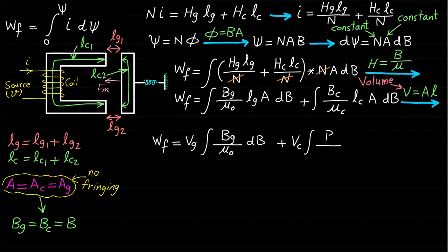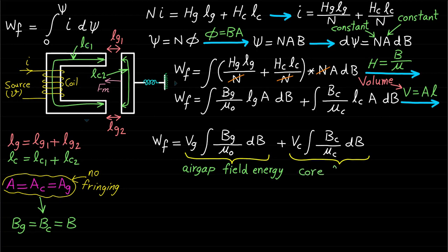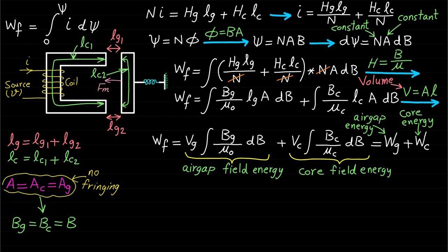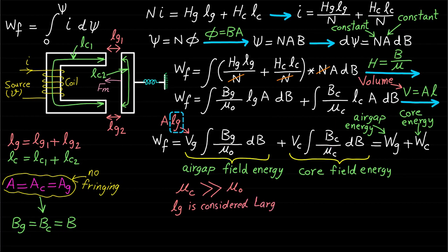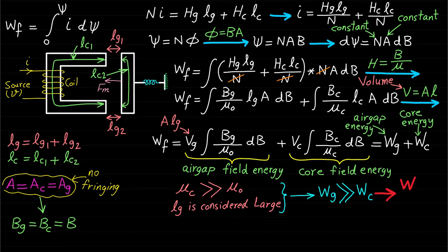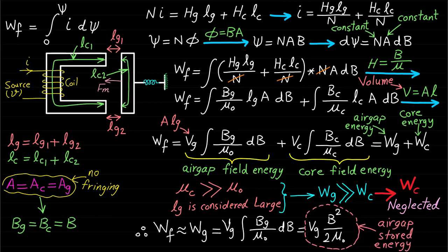This expression of the field energy has two terms. The first term represents the field energy of the air gap and the second term represents the field energy of the core magnetic material. Since the permeability of the core is much larger than the permeability of the air gap, and the air gap length is considered large in the relay system, the field energy of the air gap will be much larger than the field energy of the core. Therefore, the field energy of the core can be neglected, and the field energy will equal only the field energy of the air gap.